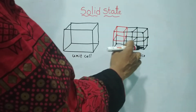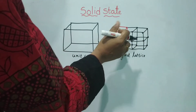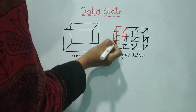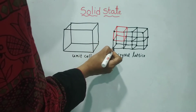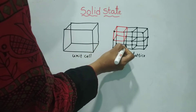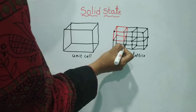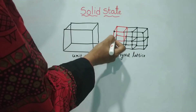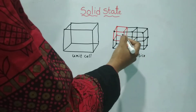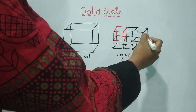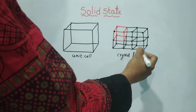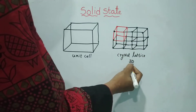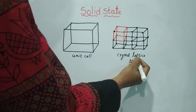Regular and repeating patterns of constituent particles. At each corner there is one constituent particle — atoms, molecules, or ions. These particles are arranged in regular and repeating patterns in 3D arrangements. This is called a crystal lattice.